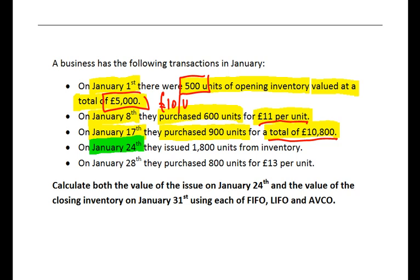Then on January the 24th, we've got an issue of inventory — 1,800 units issued, perhaps to sell to a customer — so that's going to reduce the level of inventory. And then January the 28th, right at the end of the month, another purchase of 800 units at £13 per unit. In the display, purchases and opening inventory are shown in yellow as increases, and the issue is shown in green. It's important to distinguish between the increases and decreases in inventory.